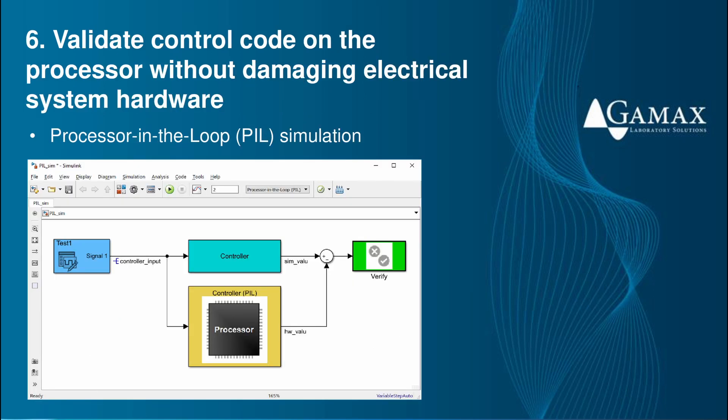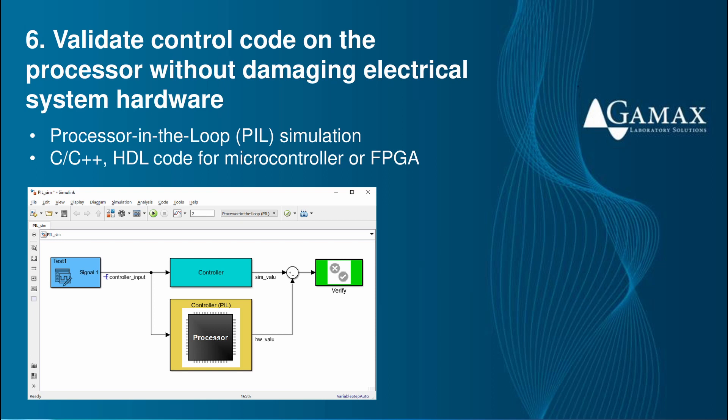At some point in our project, we will be ready to test control code for the first time in the hardware system. If the code has errors and does not behave as intended, it will need to be corrected, and if the errors are severe enough, we may have to replace hardware damaged during the test. Simulink can generate C, C++, and HDL code from control algorithms, enabling processor-in-the-loop simulation. The C, C++, and HDL code runs on the microcontroller or FPGA while the device is stepping in execution with a Simulink model of the electrical system controller, limiting the risk of damaging a hardware prototype during initial evaluations of the controller code.